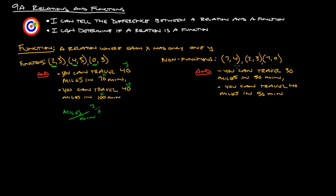A non-function example would be the points (7,4), (2,3), and (7,0), because the X value of 7 has two different Y values. That can't work — it would be like saying you could travel 30 miles in 50 minutes and also 40 miles in 50 minutes. Once you've traveled 30 miles in 50 minutes, you're not going to travel another 10 miles in no time. So that's an example of a non-function. Each X can only have one Y.